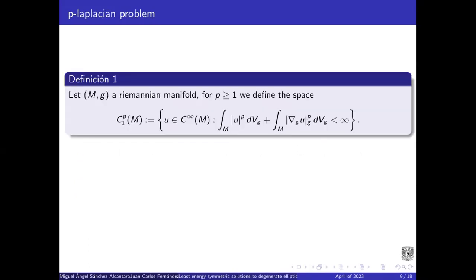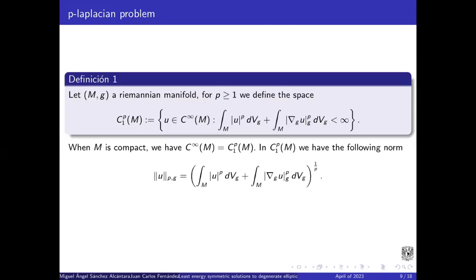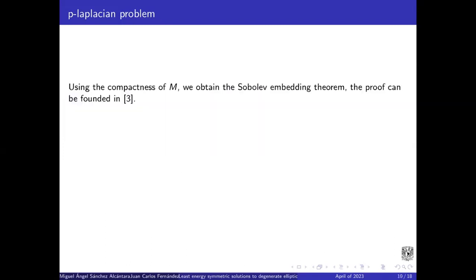Let's start with this definition. Let (M,g) be a Riemannian manifold. For p bigger or equal to one, we define this space. When M is compact, we have the smooth functions equal to this space. And in this space, we have the following norm. And the Sobolev space is the completion of this space.